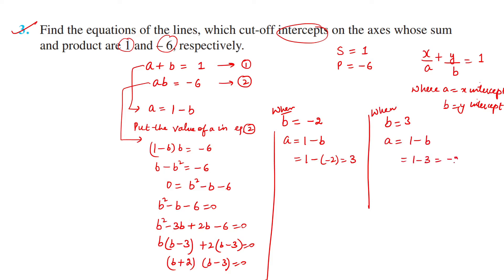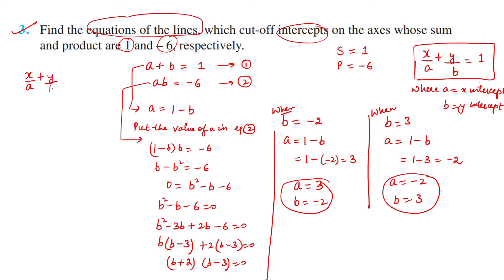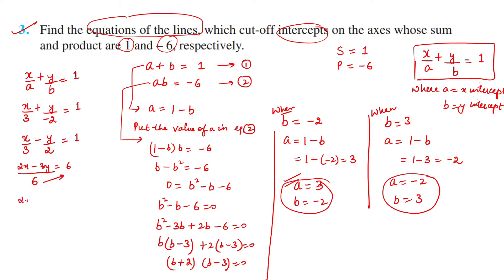When b = -2, a = 1 - (-2) = 3. When b = 3, a = 1 - 3 = -2. So the two pairs are: a = 3, b = -2 and a = -2, b = 3. Now substituting into x/a + y/b = 1: first gives x/3 + y/(-2) = 1, which simplifies to 2x - 3y = 6.